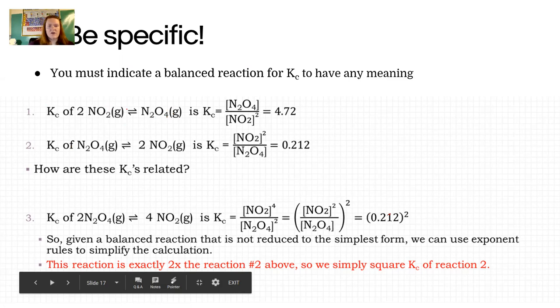As it turns out, there is a relationship between the K's when we write them forward or backward. If NO2 is forming N2O4, we would write the K as products over reactants. There's two NO2s, notice, so that exponent comes into play. Here's our measured value of that.